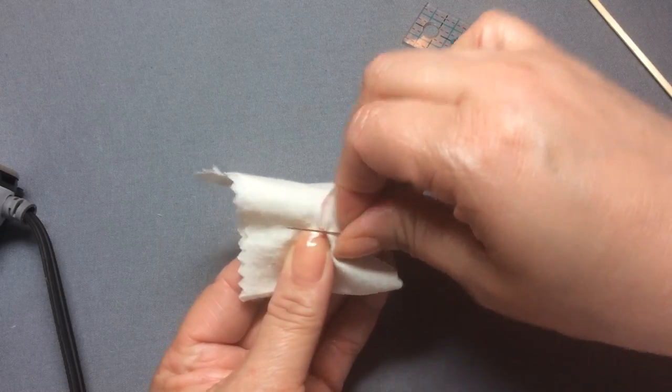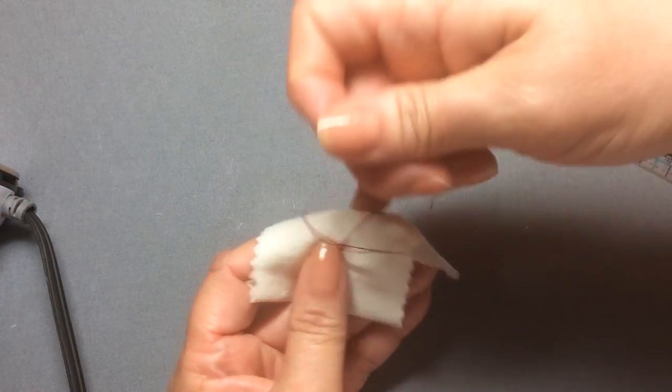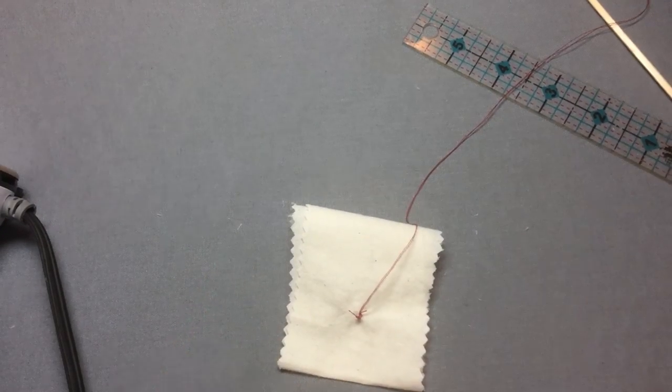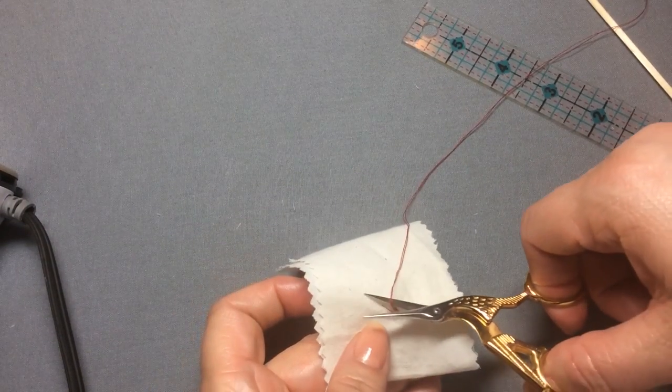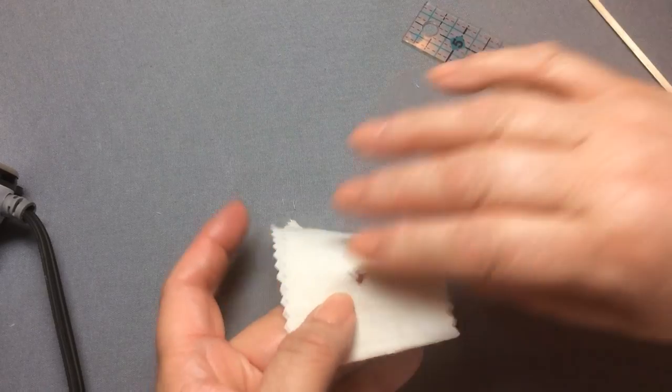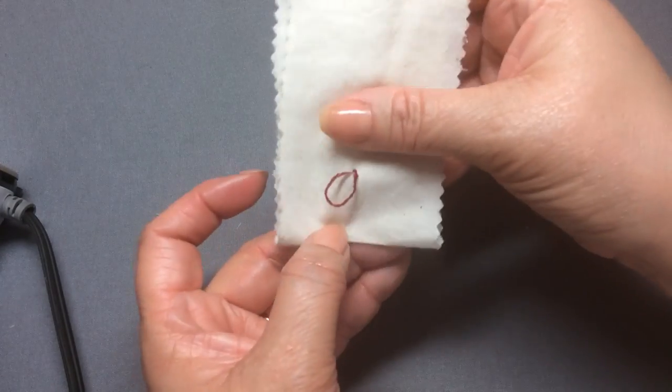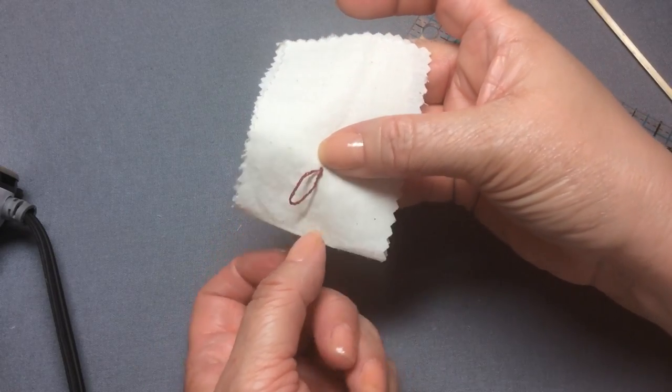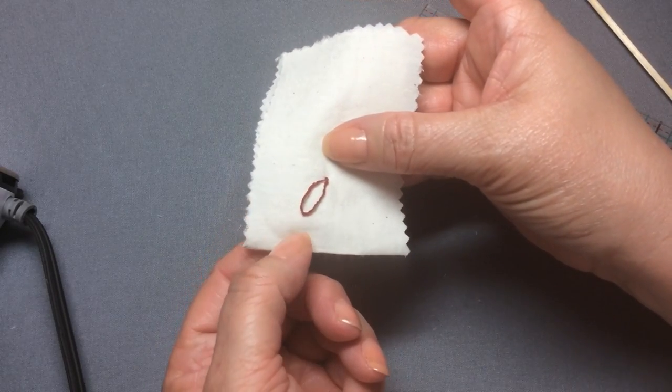Do one more time, and then we just cut this off. And we have a thread loop. I could put a button through there, a small belt. It has a lot of uses.